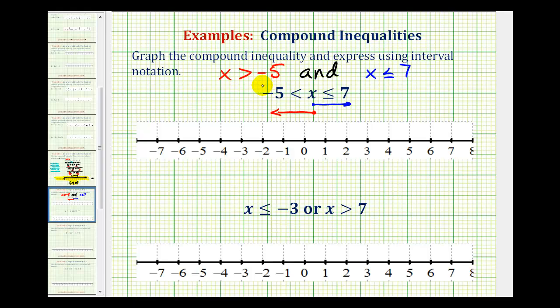So what we're going to do is graph both of these inequalities on the same number line and then determine graphically where they're both true. So to graph x is greater than negative five, we'd have an open point on negative five and an arrow to the right because it says greater than negative five.